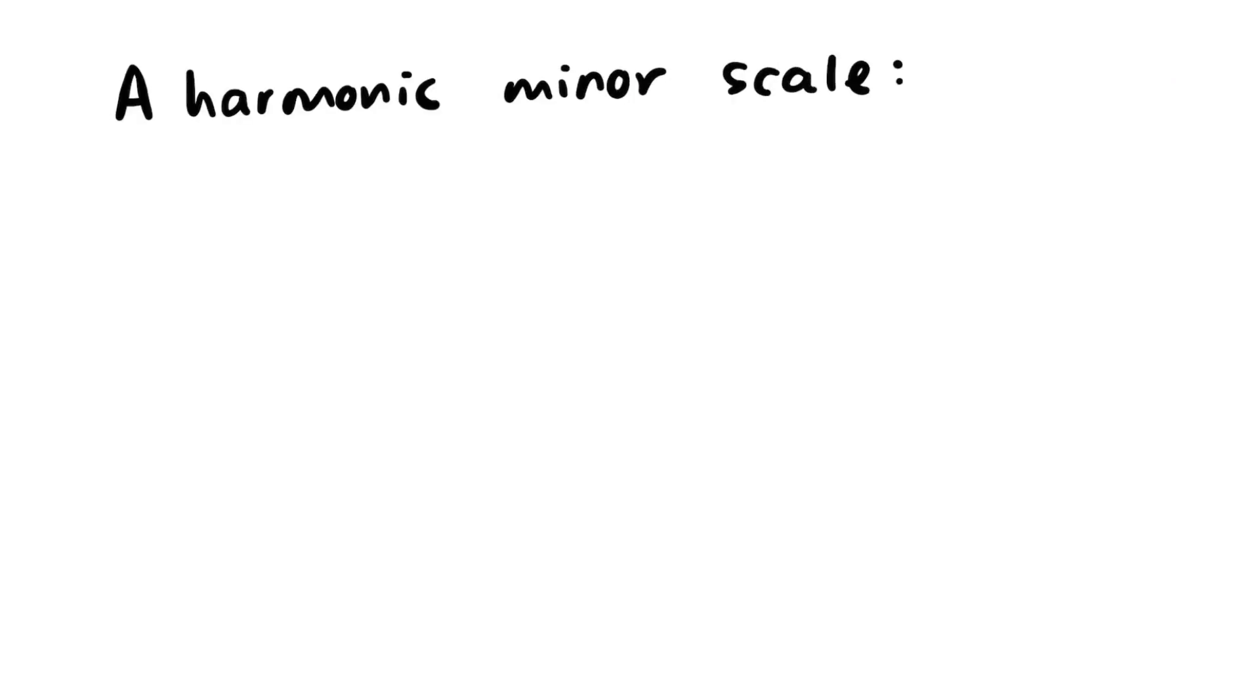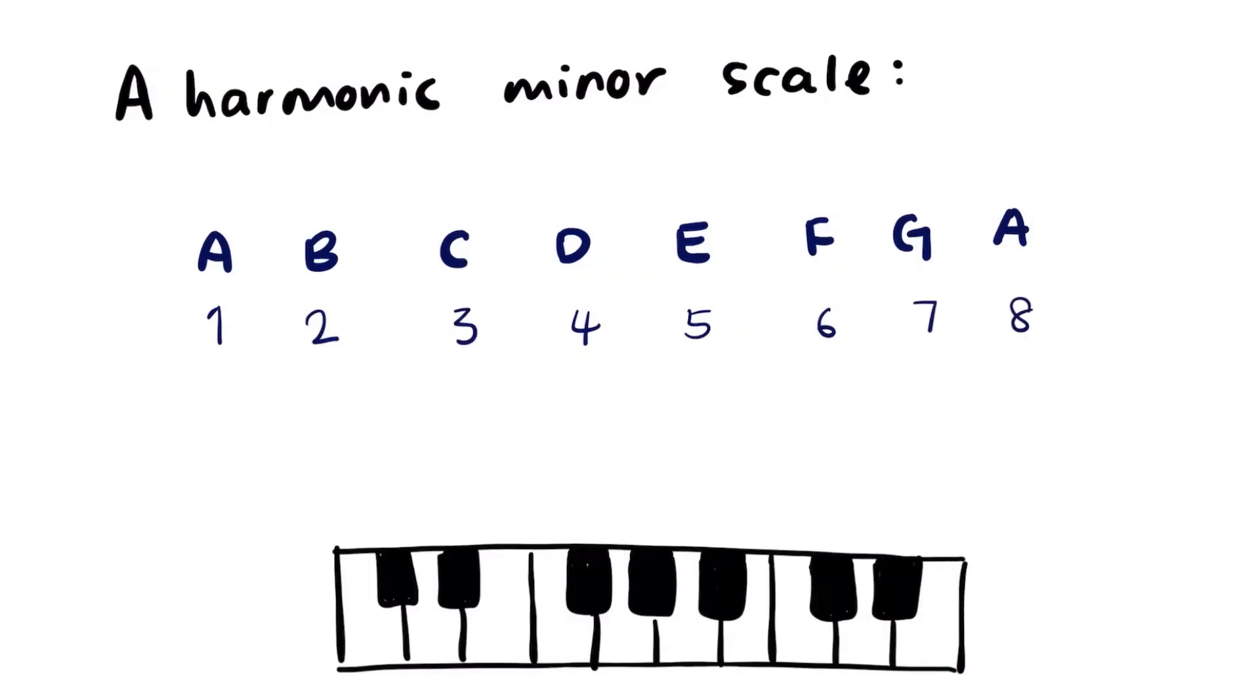An A minor scale consists of eight notes starting from A. Using the three half-step method, we move three half steps to the right from A to find C major as the relative major, which has no sharps or flats.